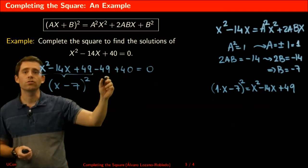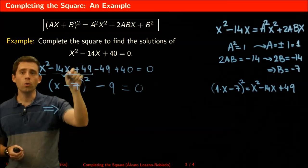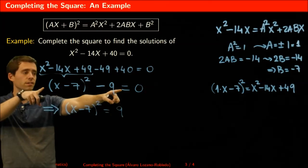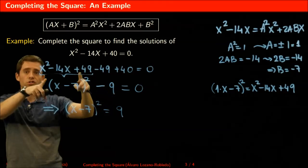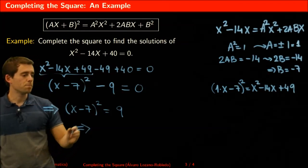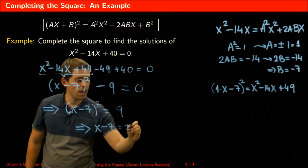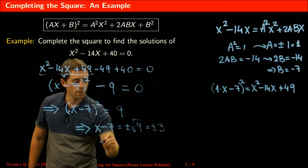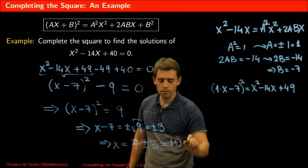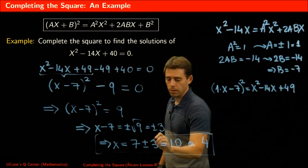So those three terms add up to x minus 7 squared, and then minus 49 plus 40 is minus 9. So the equation gives x minus 7 squared equals 9. Completing the square has been successful — I've written my original polynomial as a square plus a constant. Therefore x minus 7 equals plus or minus the square root of 9, which is plus or minus 3, and so x equals 7 plus or minus 3, which is either 10 or 4. That is the solution, done by completing the square.